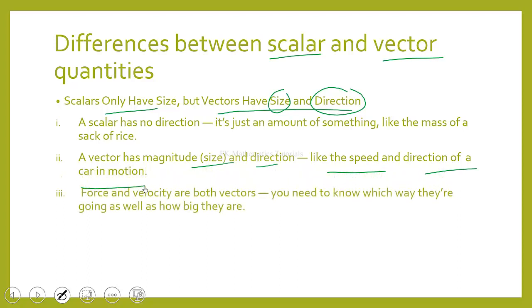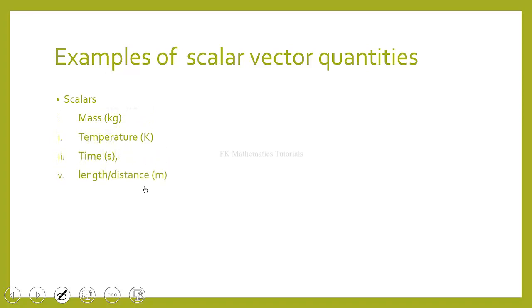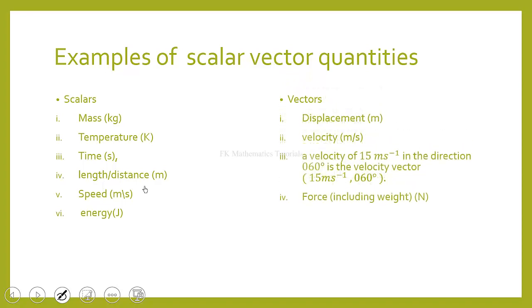Force and velocity are both vectors. That means we need to know which way the force is going as well as how big the force is. Examples of scalars include mass, temperature, time, length, speed, and energy. For vectors, we have displacement, velocity, force (which includes weight), and acceleration.